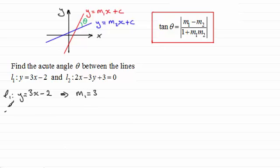And if we take the second line L2, for this one we need to make y the subject. So rearranging this, making y the subject, you should find you get y equals 2 thirds x and then plus 1. So from this, we can take the second gradient m2 to be equal to 2 thirds.